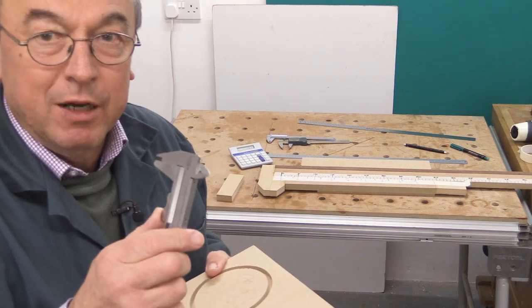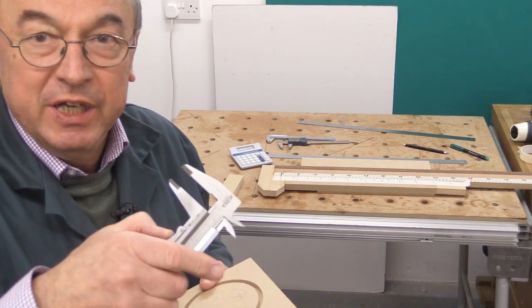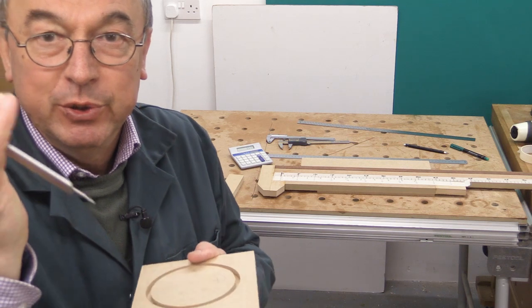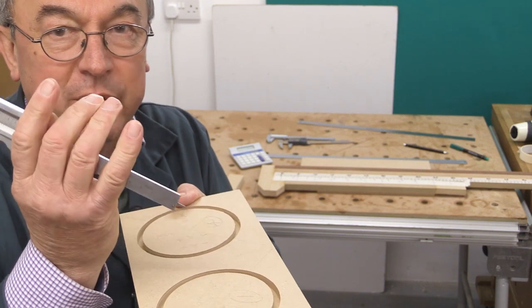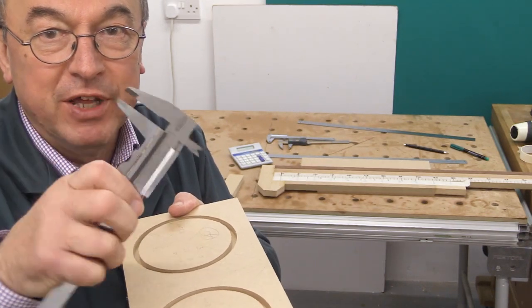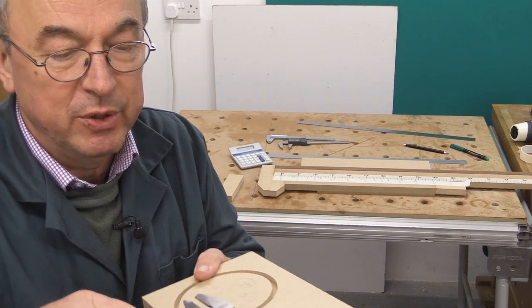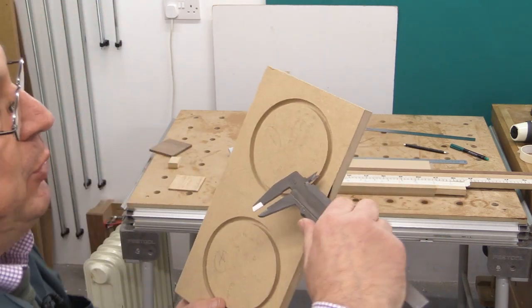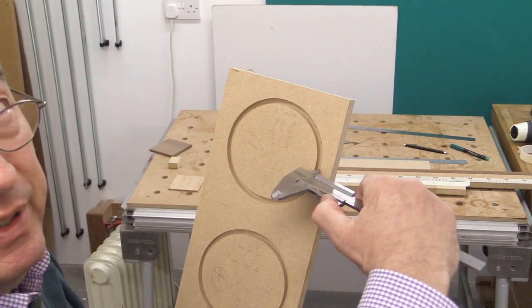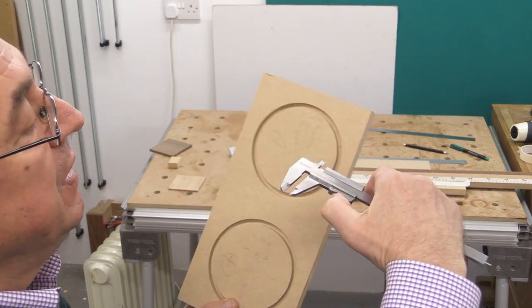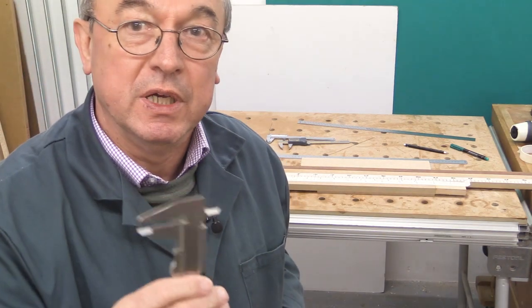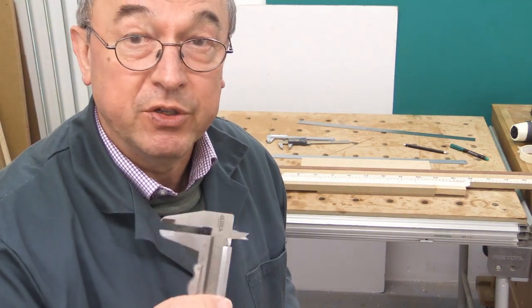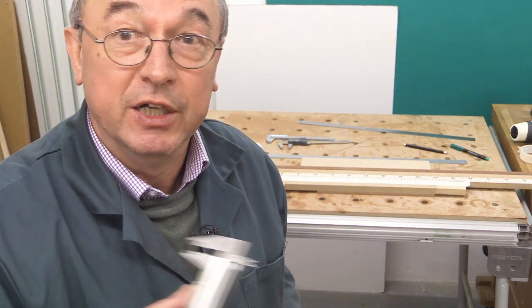Don't forget your real caliper can not only measure the length of something, but it also can do depth like so. So I now have that depth there, which I can read off the scale. And it also allows you to measure between something. I'm just going to, for sake of argument, do it between there and there. I can then measure that off the scale. So your calipers normally can work in three ways: the depth, the width, and also the distance between two faces.